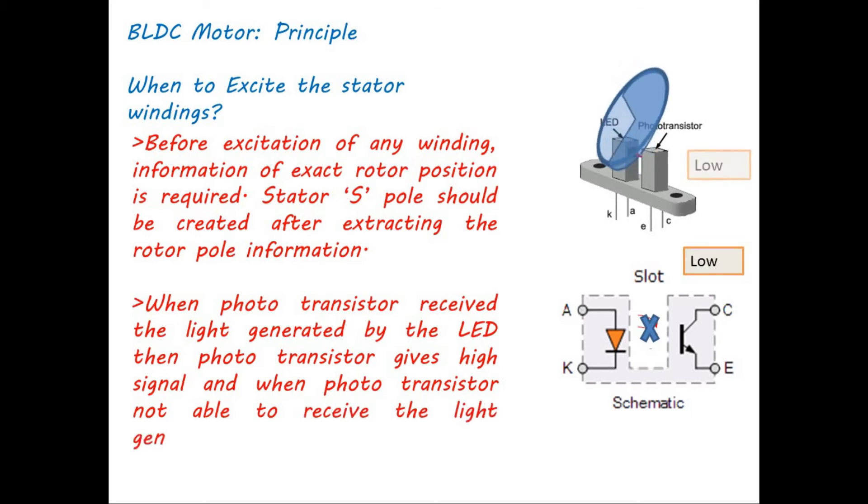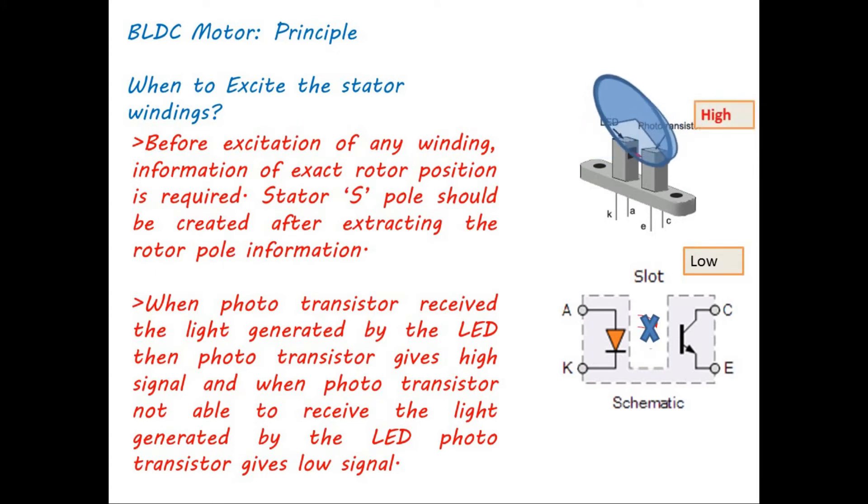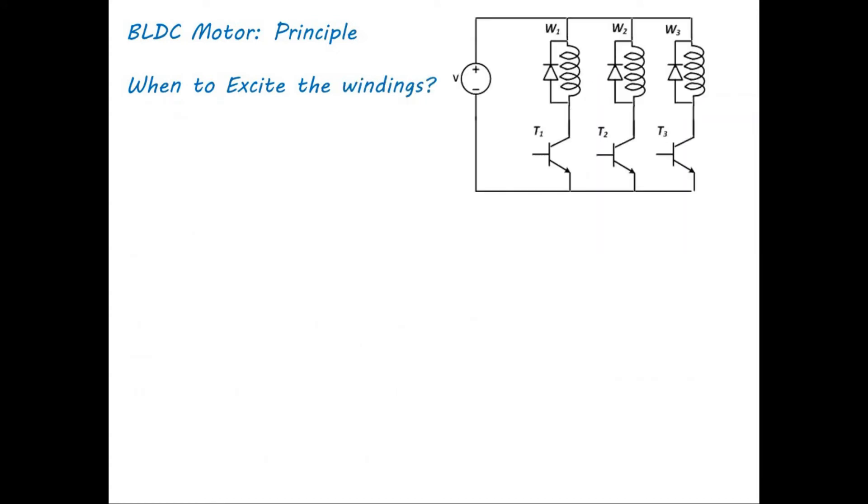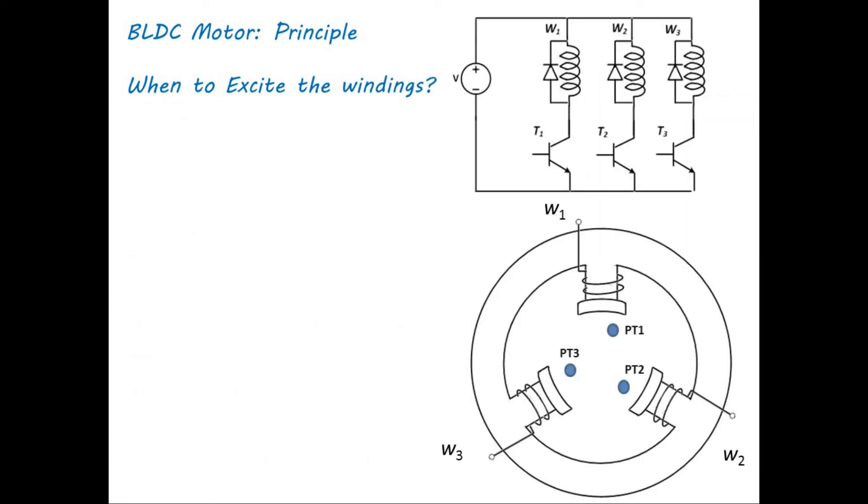Here if the rotating disk blocks the LED signal, phototransistor gives low signal, otherwise it provides high signal. In BLDC motor, we have three optical encoders and they are placed 120 degrees apart. The phototransistor of this encoder is connected to transistor switch to excite the winding.